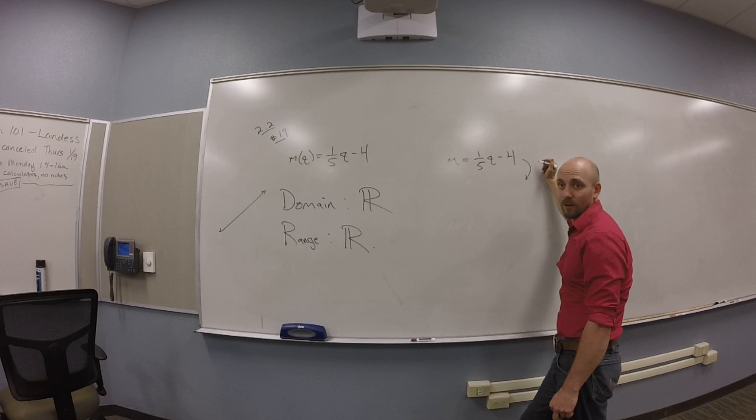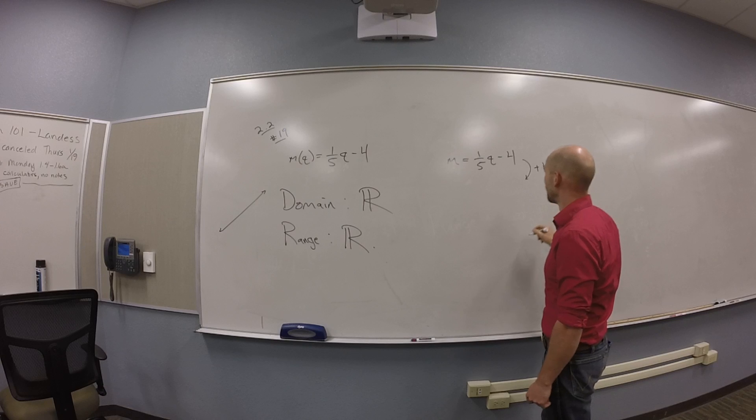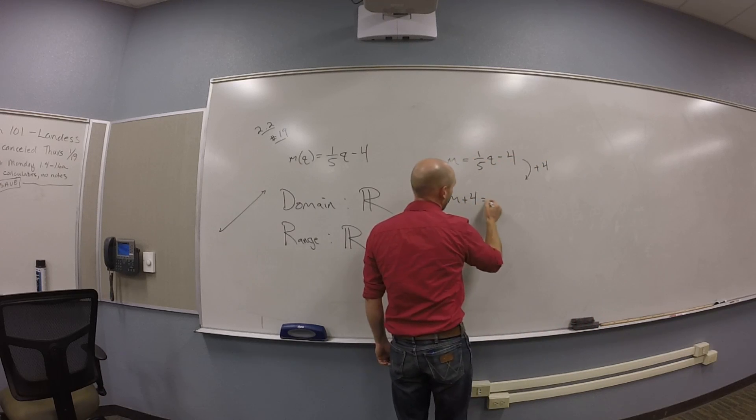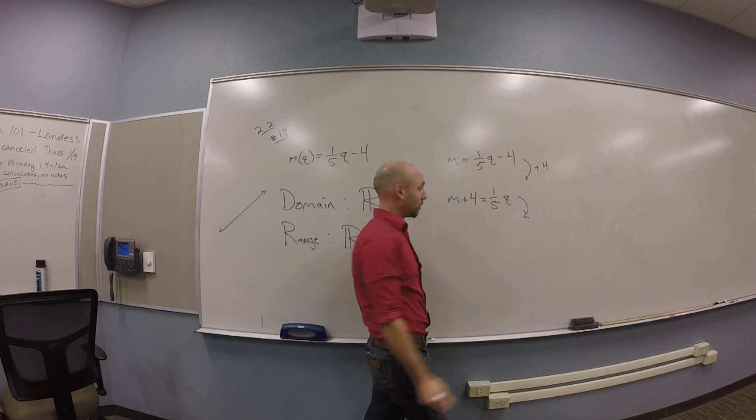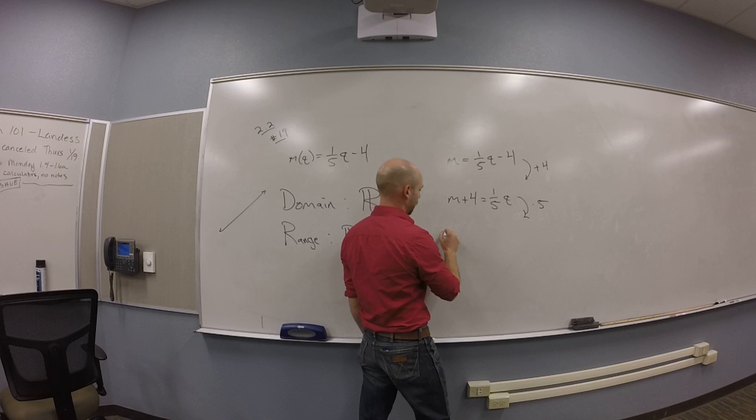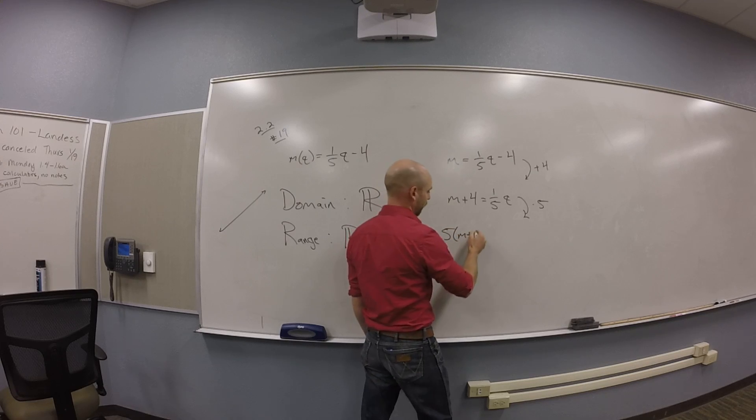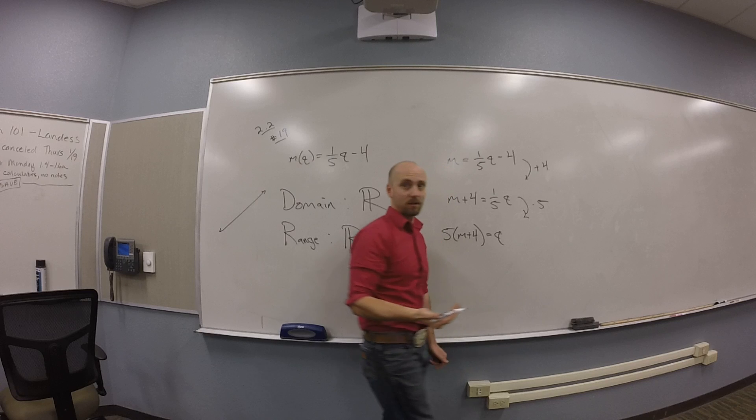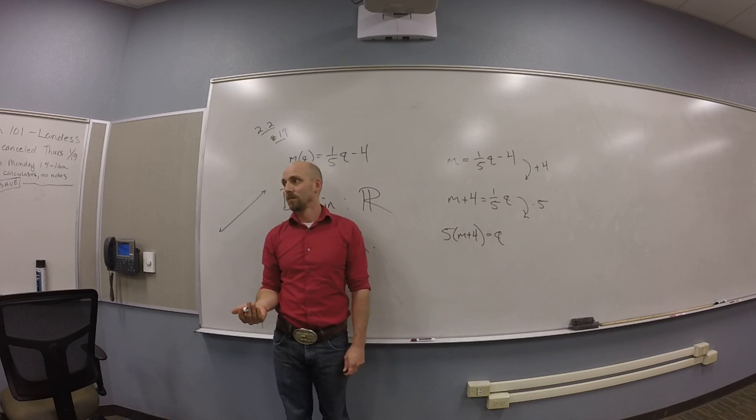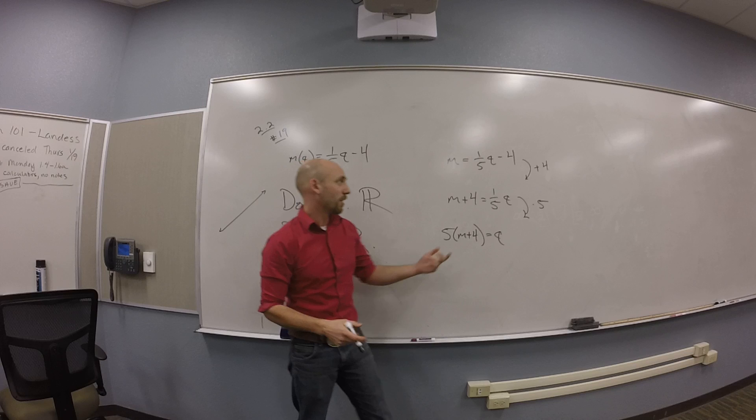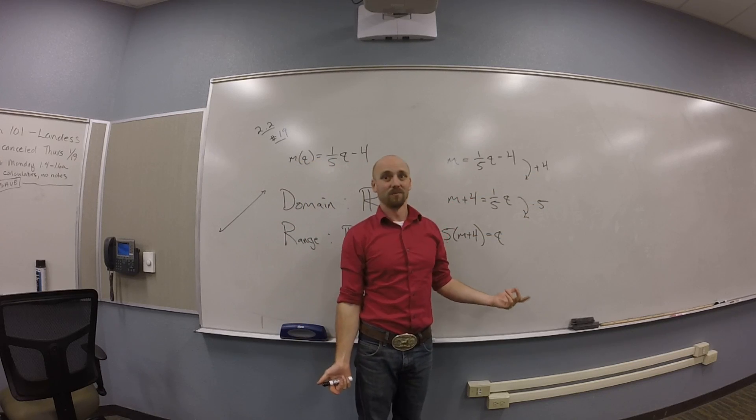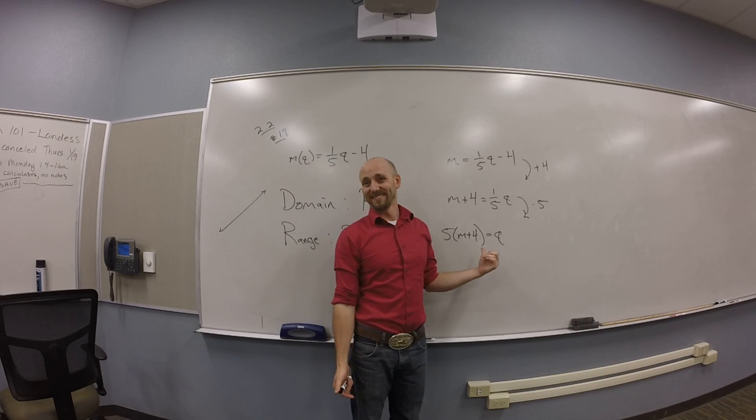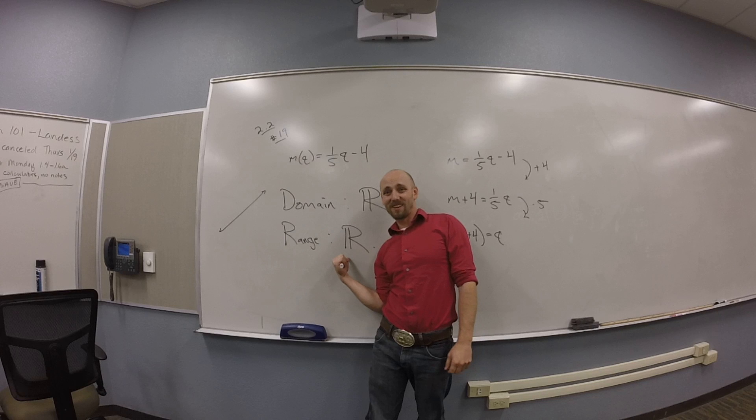So here, what's my first step to solve for q? I'm going to add 4. So I'm going to get m plus 4 is 1/5 q. Then what? Then I'm going to multiply by 5. So I'm going to get 5 times m plus 4. That's q, right? I think I'm pretty much allowed to take any number, add 4 and multiply by 5. So yeah, the range has got to be all of R.